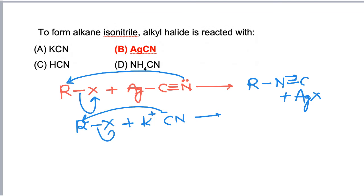So now this carbon acts as a nucleophile and in this case cyanide is formed as a product. So for alkyl isonitrile we have to use silver cyanide and hence the correct answer is B.